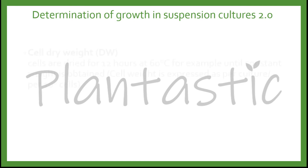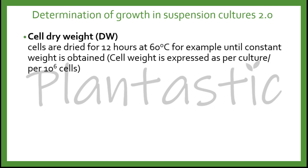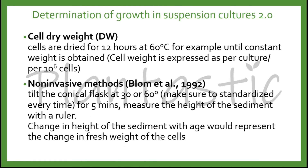Following that, we can use dry weight of callus, whereby the callus is dried for 12 hours at 60°C until a constant weight is obtained. The cell weight is expressed per culture or per 10⁶ cells. The last method is a non-invasive method, in which we tilt the conical flask at 30 or 60 degrees — making sure to standardise the angle every time — for 5 minutes, then measure the height of the sediment with a ruler. The change in height of the sediment over time represents the change in the fresh weight of the cells.